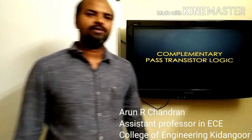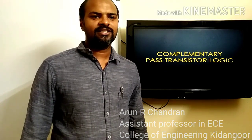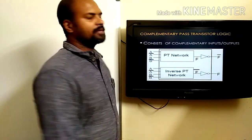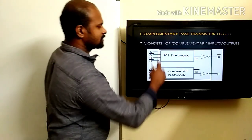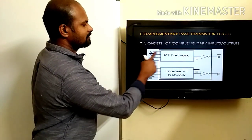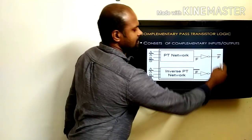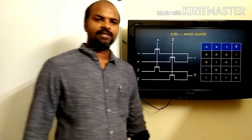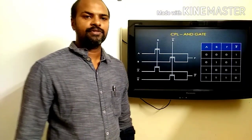Today we are going to discuss complementary pass transistor logic, which consists of complementary inputs and outputs. This is a complementary pass transistor logic block — we have complementary inputs and will get complementary outputs as well. Let's take the case of an AND gate and how we can implement it using complementary pass transistor logic.